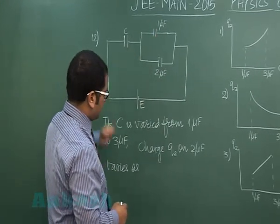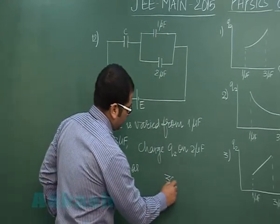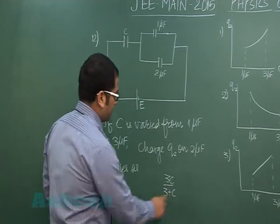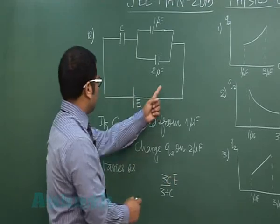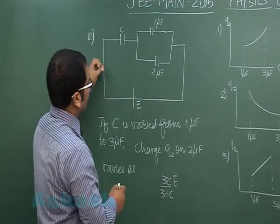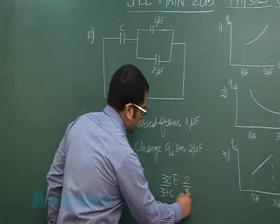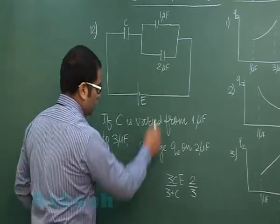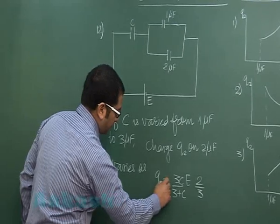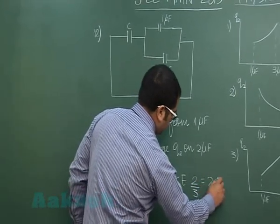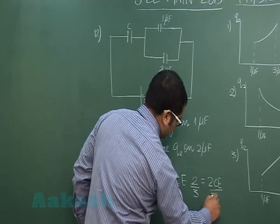First, the net capacitance: this is 3 and C in series, so that would be 3C/(3+C) is the net capacitance. Into E would give me the charge to this root, and that charge would go in the ratio of 2 is to 1. So 2/3 of this charge would go to 2 microfarad, and this now comes out to be q₂ = 2CE/(3+C).